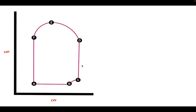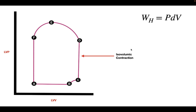Now let's discuss the total energy of a heartbeat. During a heartbeat, there are actually phases in which zero external work is done. For example, during isovolumic contraction, both the mitral valve and aortic valve are closed, and the ventricular muscles are contracting, but the volume of the ventricle remains the same. This is essentially an isometric contraction — because there is no change in volume, the work done by the heart in this phase is zero.